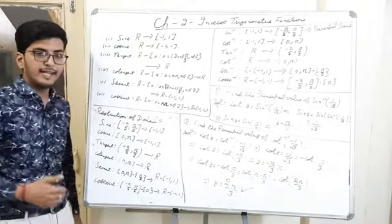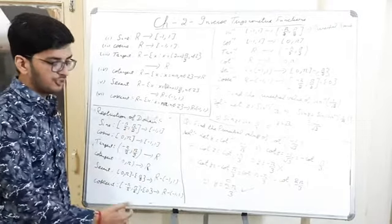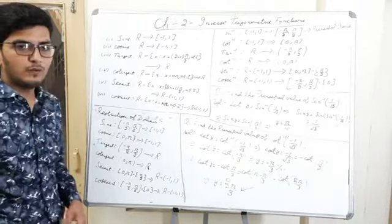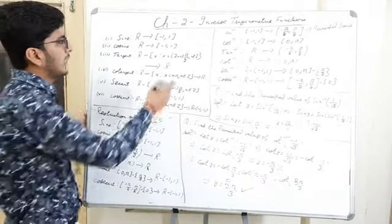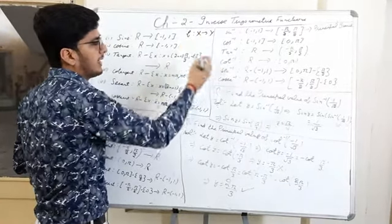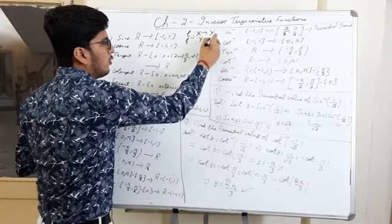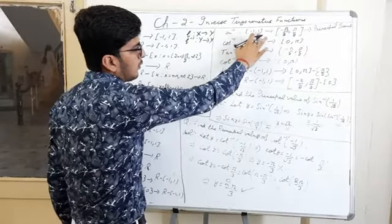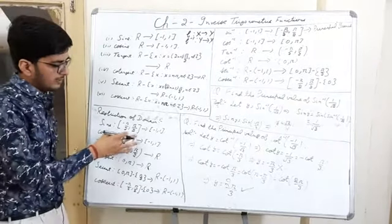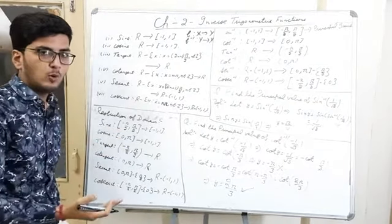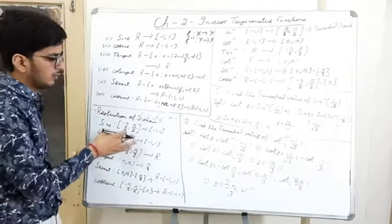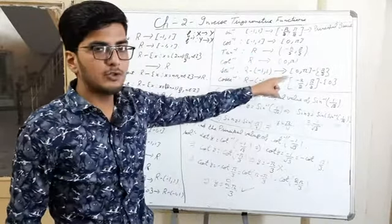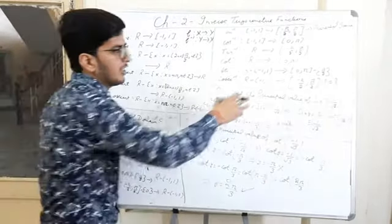Now all these functions with restricted domains are one-one and onto — you can verify that they all became bijective. Since they are bijective, we can find their inverses. As you know, if f is a bijective function from X to Y, then f⁻¹ is a function from Y to X. Also, this domain restriction is not unique — we can restrict the domain in other ways, but what we are taking here is called the principal branch.